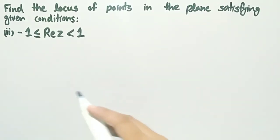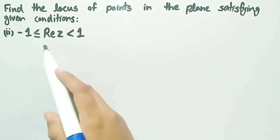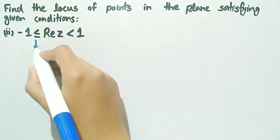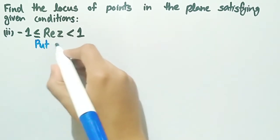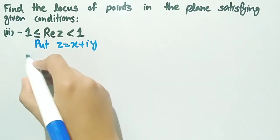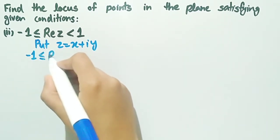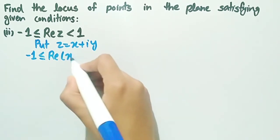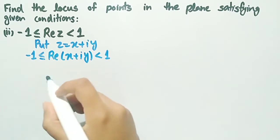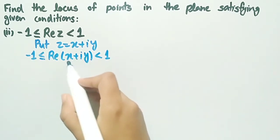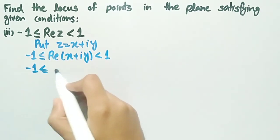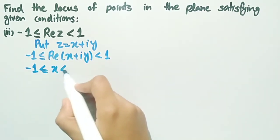The second example is: minus 1 is less than or equal to the real part of z, which is less than 1. We put z equal to x plus iota y and get minus 1 is less than or equal to the real part of x plus iota y, which is less than 1. Since the real part of x plus iota y is x, we write this as minus 1 less than or equal to x less than 1.